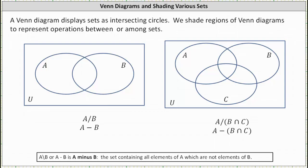We want to shade the region of the Venn diagram that represents the given set operation. On the left, we have A minus B, which can be expressed in either of these two ways.